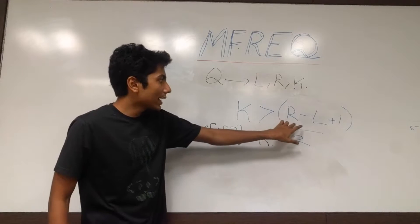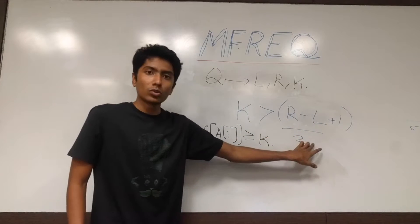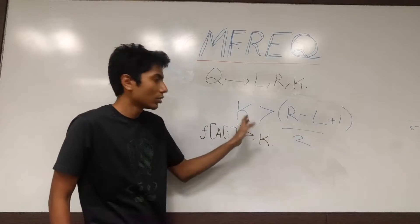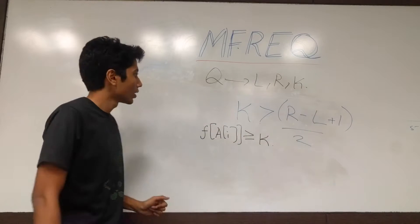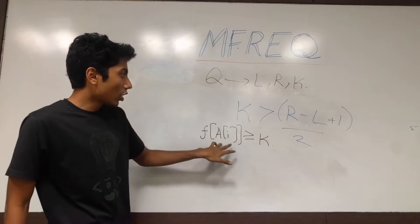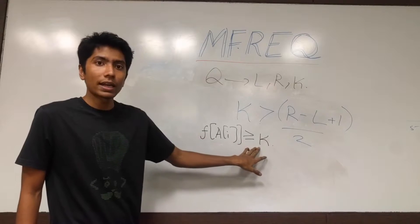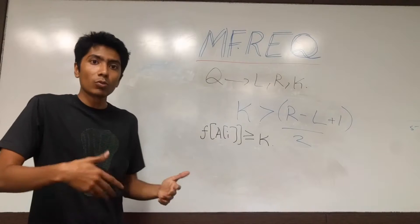So k is greater than r minus l plus 1 by 2, so that's the size of the subarray by 2 is less than equal to k. The frequency of this element has to be greater than equal to k, so that's more than 50%.